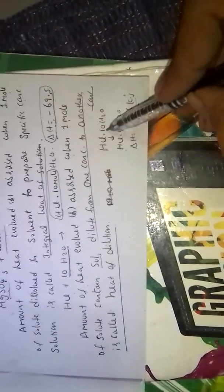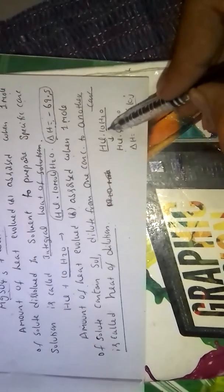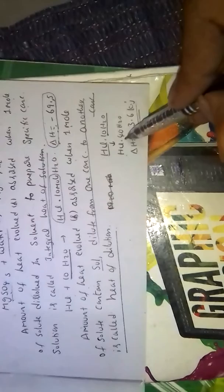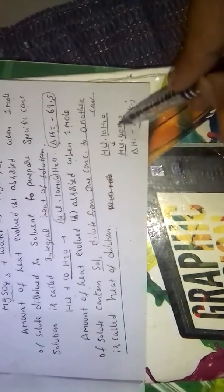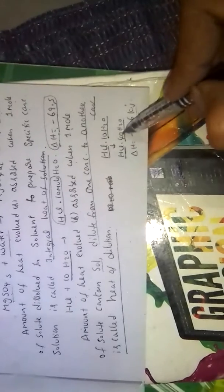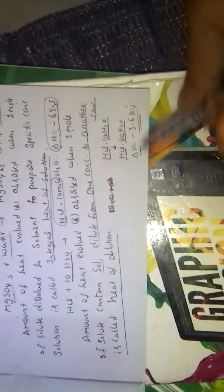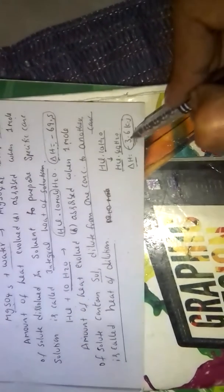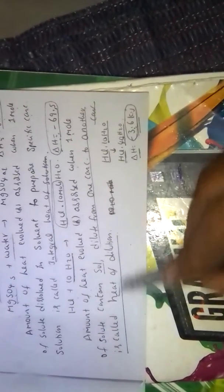For example, HCl 10H2O with 10 water molecules, on dilution is converted to 40 water molecules, HCl 10 mole water to 40 mole water. Then delta H change is minus 3.6 kilojoules. This heat liberated denotes the heat of dilution.